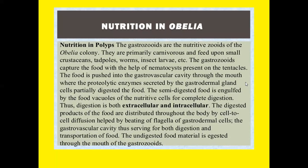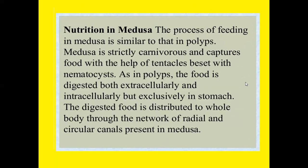Nutrition in Obelia — nutrition in polyps: gastrozooids are the nutritive zooids in the Obelia colony. They are primarily carnivorous and feed upon small crustaceans, tadpoles, worms, insect larvae, etc. The gastrozooid captures food with the help of nematocysts on the tentacles. The food is pushed into the gastrovascular cavity through the mouth, where proteolytic enzymes secreted by gastrodermal gland cells partially digest it. The semi-digested food is engulfed by nutritive cells via food vacuoles for complete intracellular digestion. Thus digestion is both extracellular and intracellular. Digested products are distributed throughout the body by cell-to-cell diffusion aided by beating of flagella of gastrodermal cells. Undigested food material is egested through the mouth of the gastrozooid.